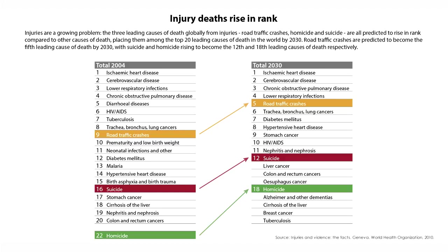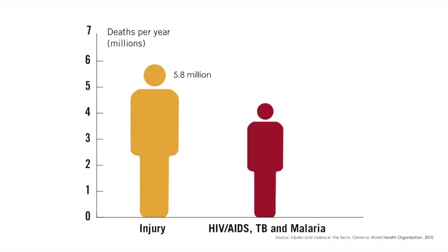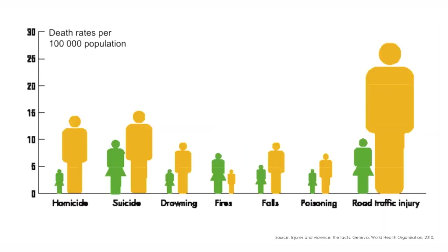These are contributing to a rising burden which now exceeds the burden contributed by HIV-AIDS, tuberculosis, and malaria put together. About 5.8 million people die each year as a result of injuries. This accounts for about 10% of the world's deaths and is considerably more than the number of deaths resulting from major infectious diseases like HIV, TB, and malaria.